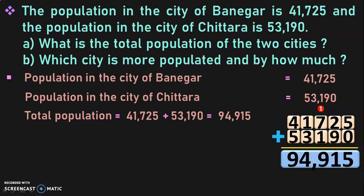The next question: which city is more populated and by how much? On comparison, we see that 41,725 and 53,190 are both five-digit numbers. For comparison, we look at the leftmost digit — which is 4 and 5 in this case. We know that 5 is greater than 4, so the population of Chittara is more. But we need to find out by how much.